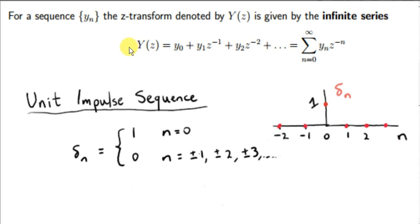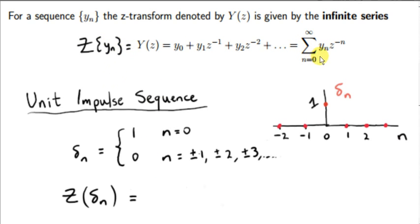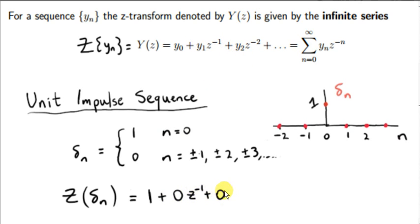Now let's look at another notation for the Z-transform — we could write Z of the sequence. Our definition only involves values of n greater than or equal to 0, so we won't consider negative n. The zeroth term y0 equals 1. When n=1 the sequence has value 0, multiplied by z^(-1). The second term is also 0. So the Z-transform of the unit impulse sequence is simply 1.